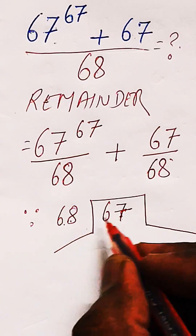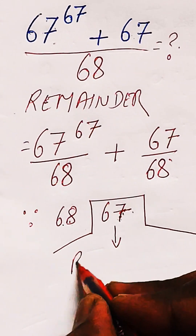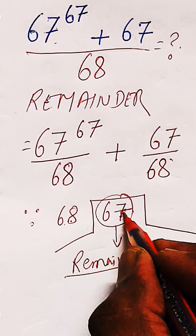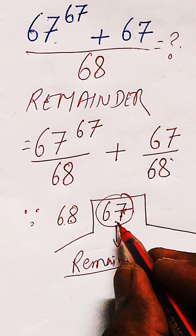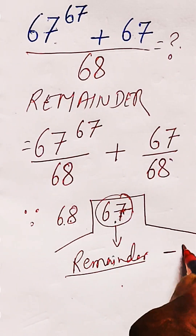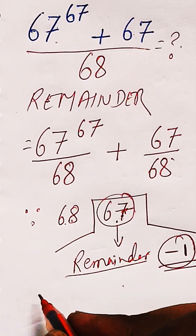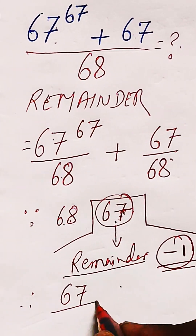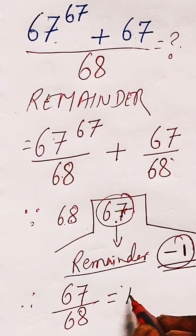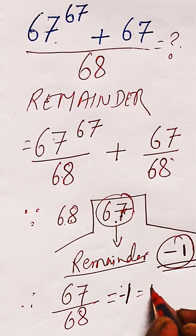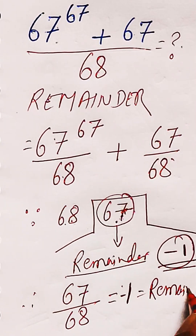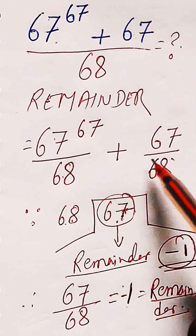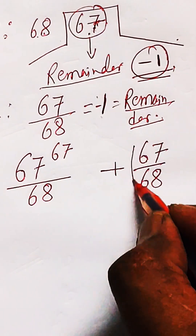Since it is 67 and not 68, you are left with a remainder. If it were 68 the remainder would be 0, but since it is less by 1, the remainder will be minus 1. Therefore, 67 divided by 68 gives a remainder of minus 1.